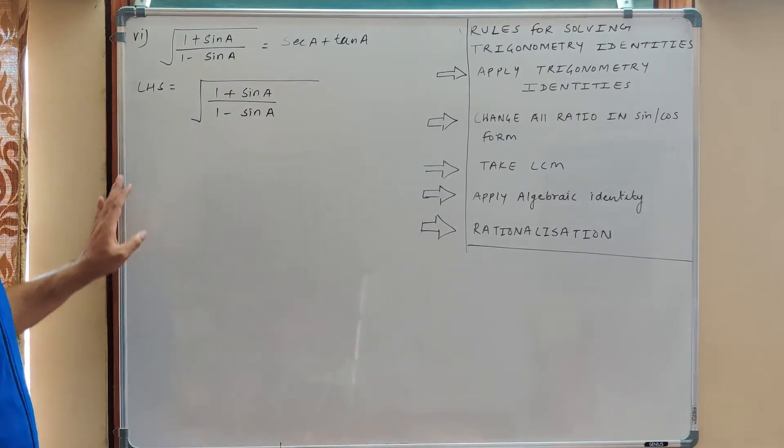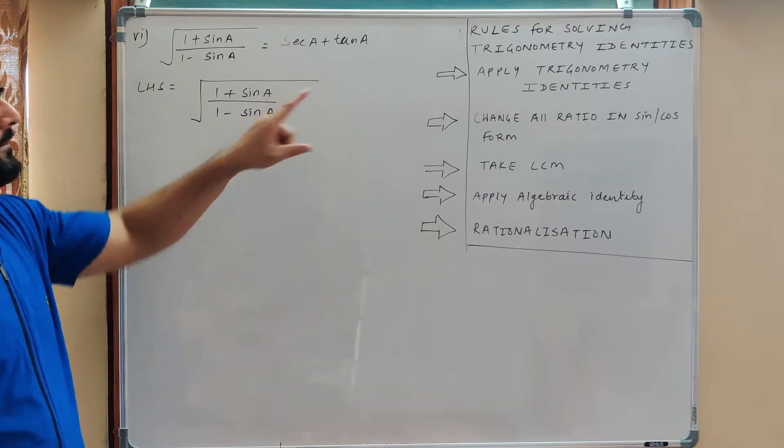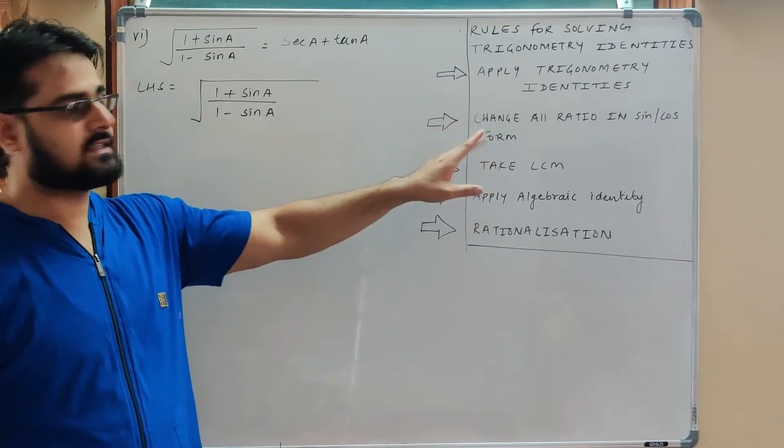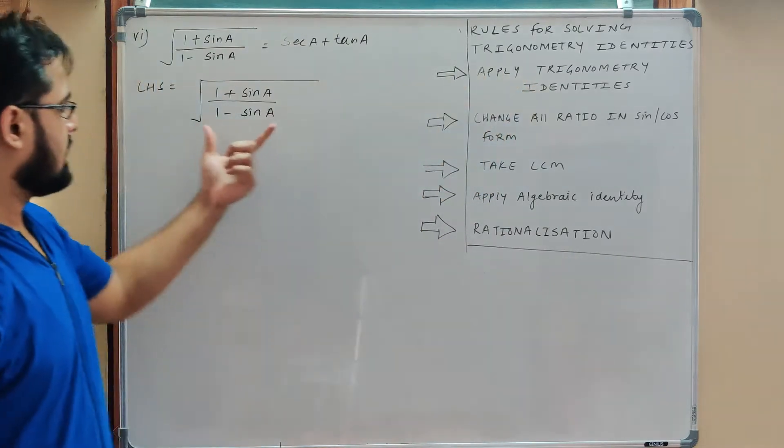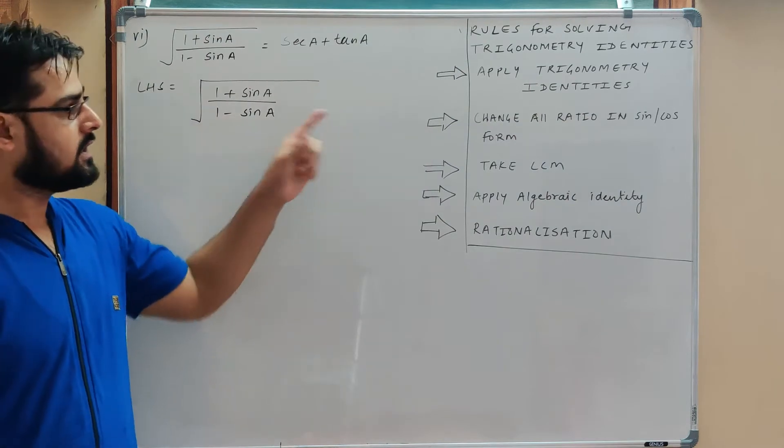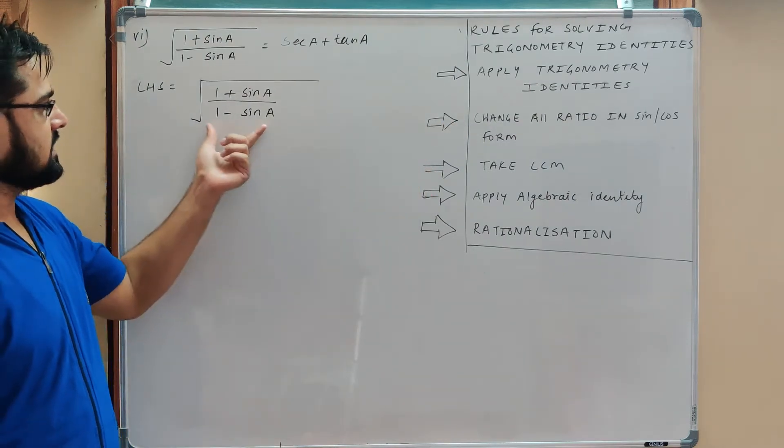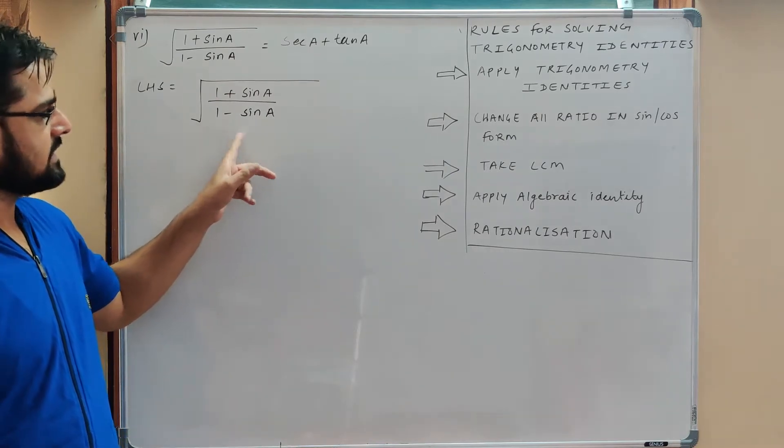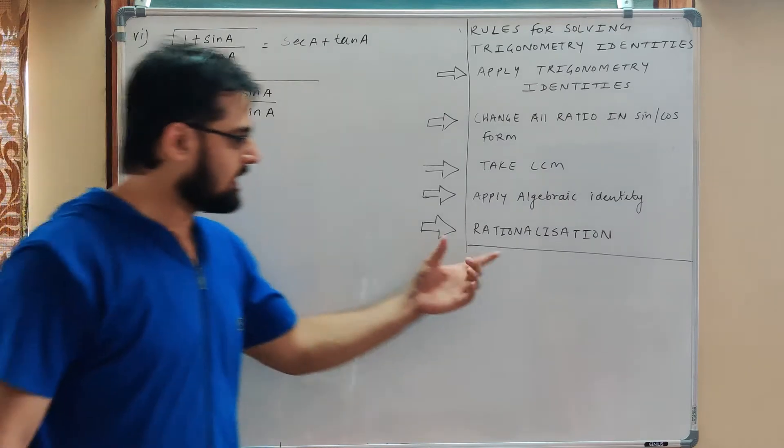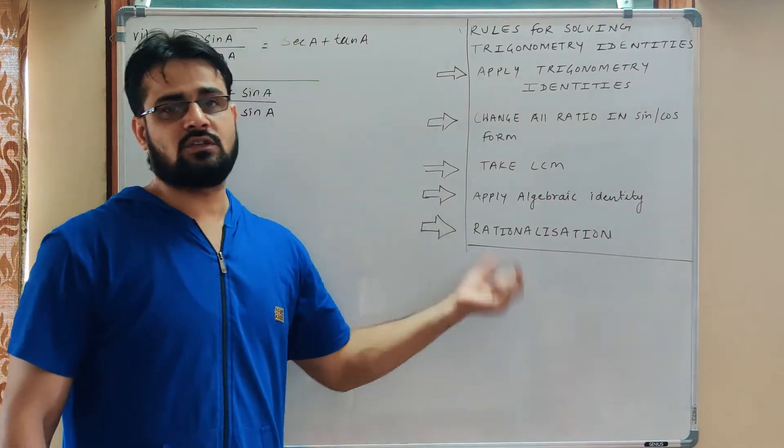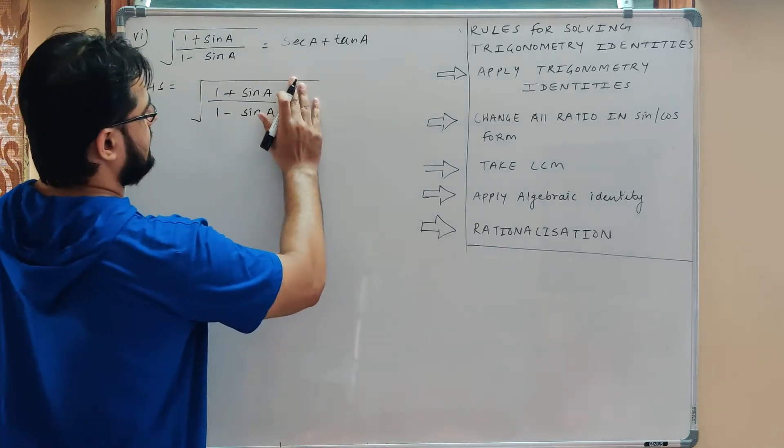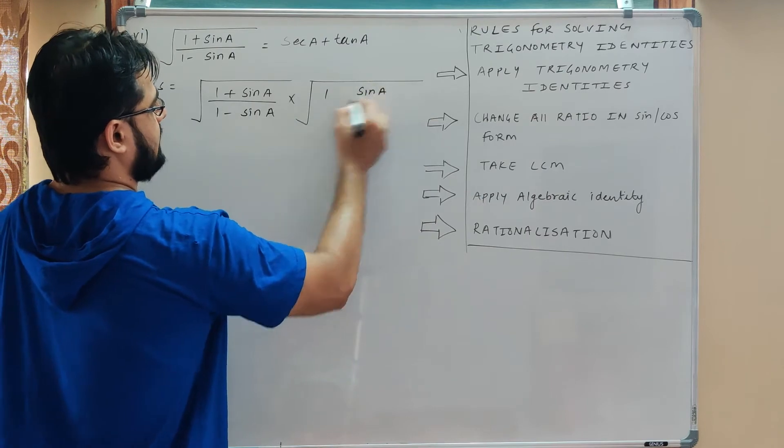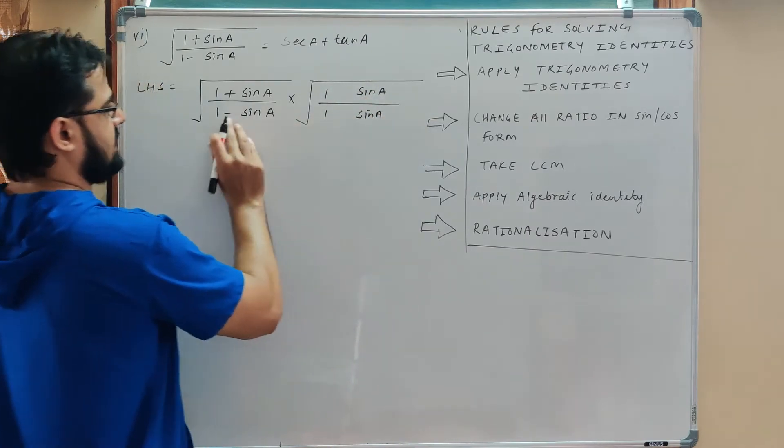Now the problem is how to solve this. We will rationalize by multiplying 1 plus sine A in both numerator and denominator.